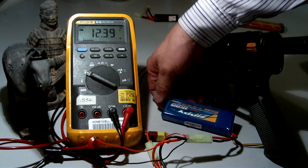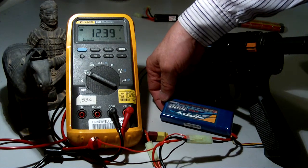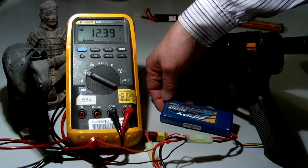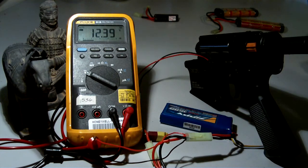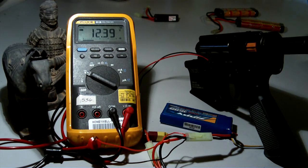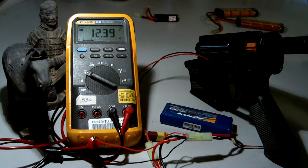I have an 11.1 volt, 1600 mAh, 20C LiPo battery which is registering right now at 12.39 volts. A fully charged LiPo battery has a voltage between 12 volts to 12.6 volts, so this pretty much says this LiPo battery is fully charged.